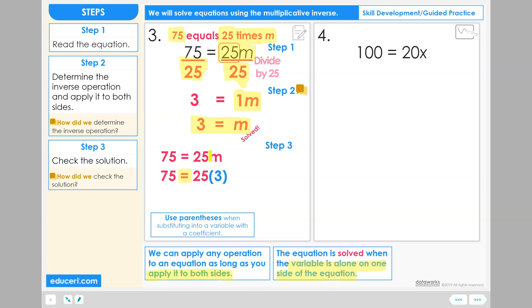25 times 3 equals 75. 75 equals 75 is a true equation, a true comparison, and so we know that m equals 3 is the value that makes 75 equals 25 times m true.